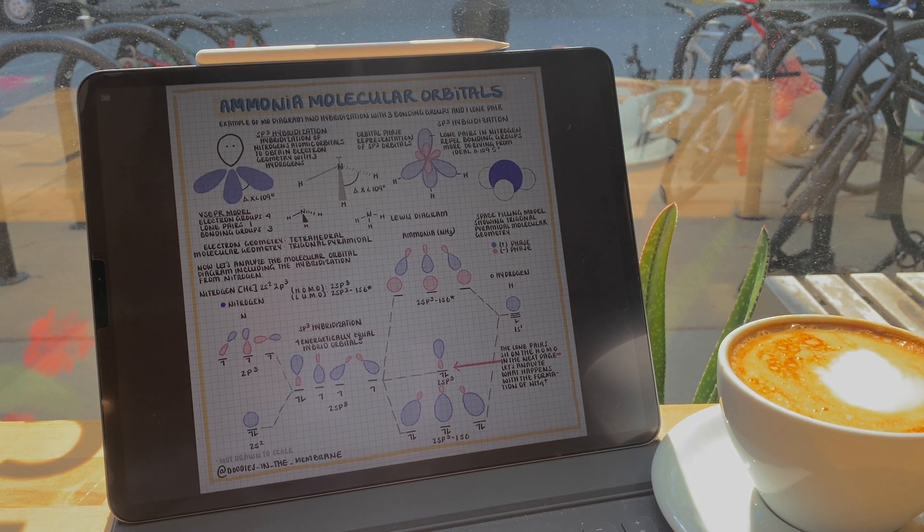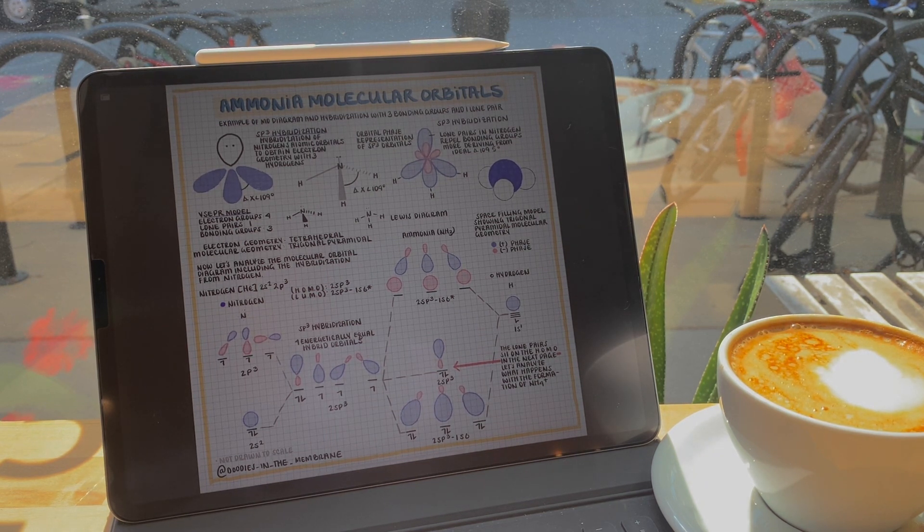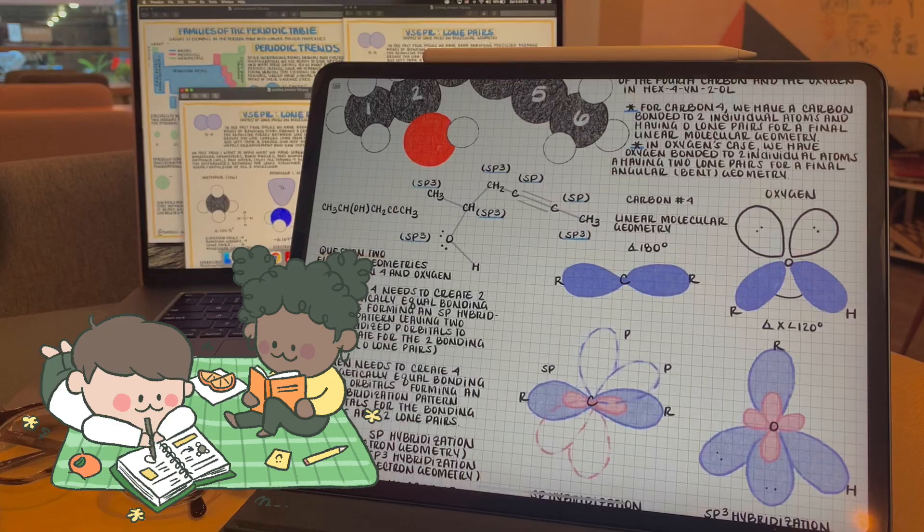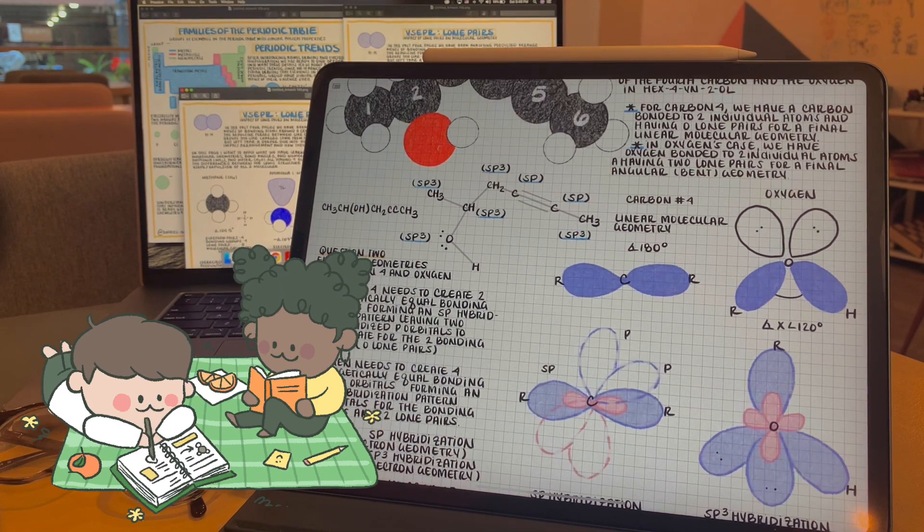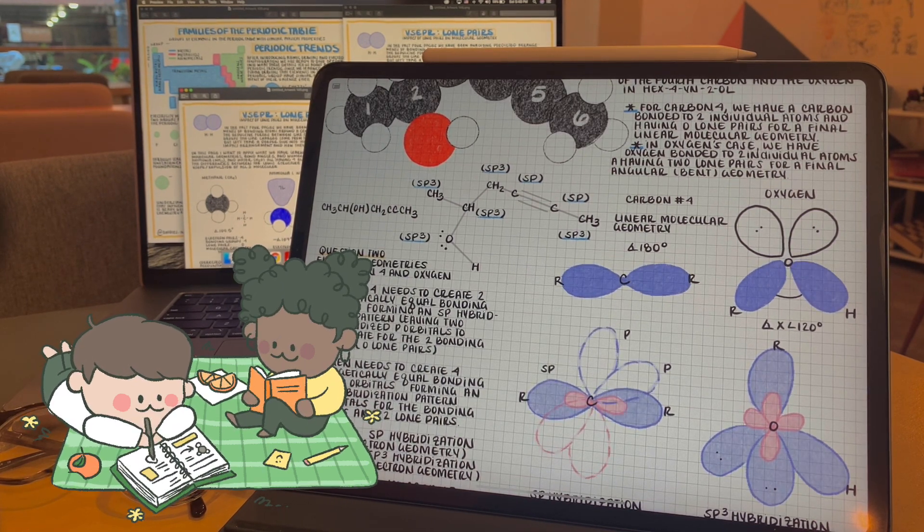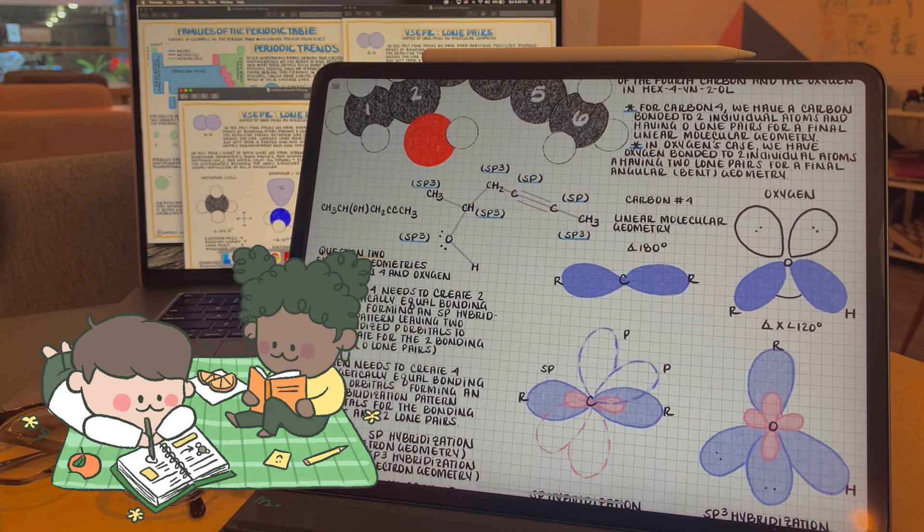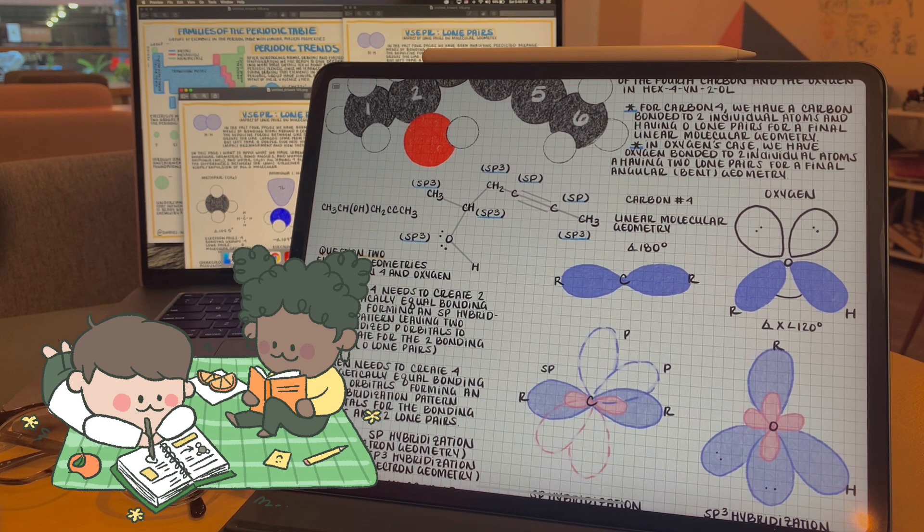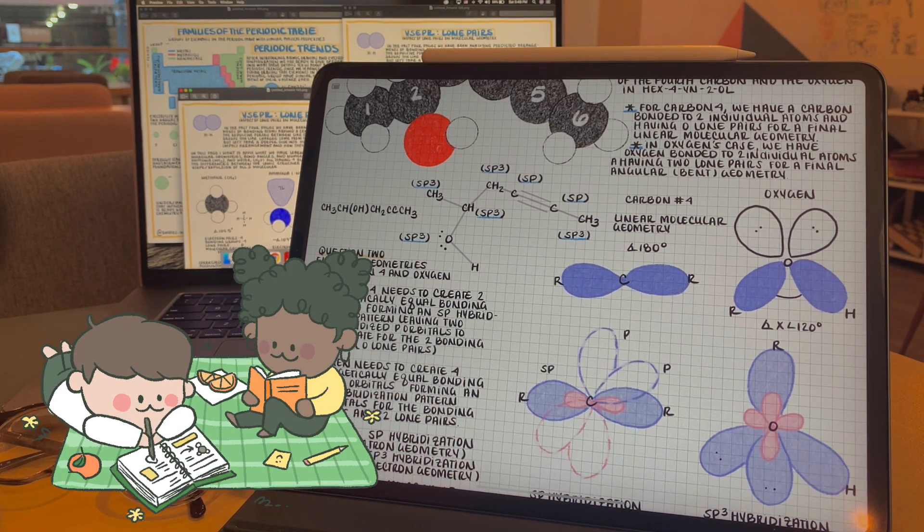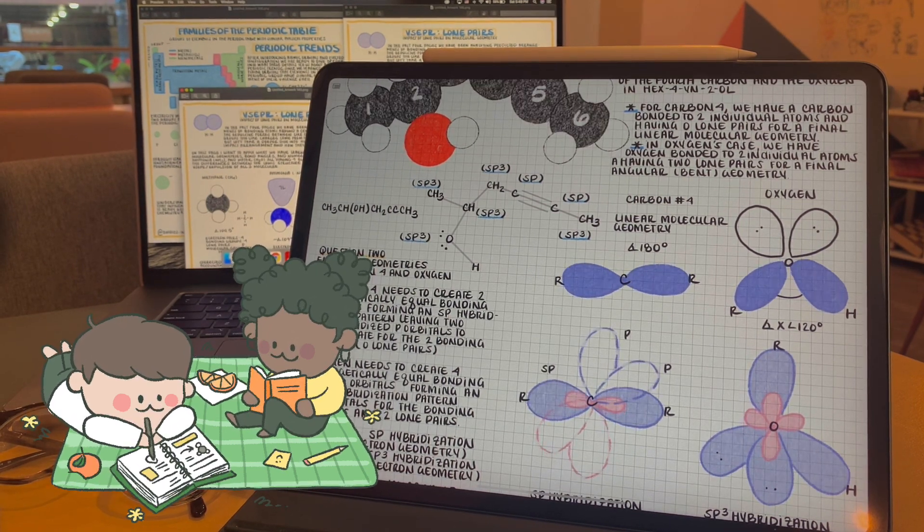Don't worry, we'll dive into a lot of examples when we do practice problems and molecular orbital diagrams in future videos. Even with larger molecules, we can label the orbital hybridization, electron geometry, and molecular geometry of all the internal atoms, so the atoms bonding to more than one other atom, or atoms having more than two bonding groups for another definition.